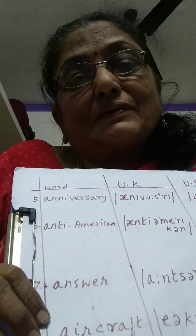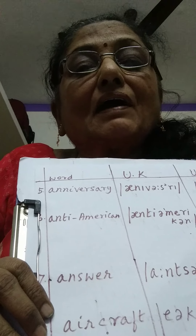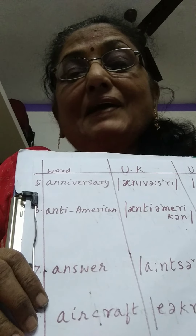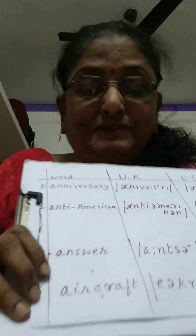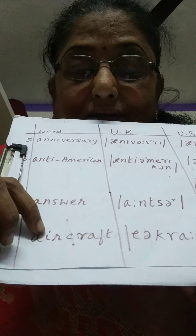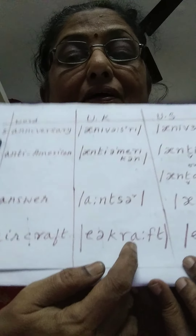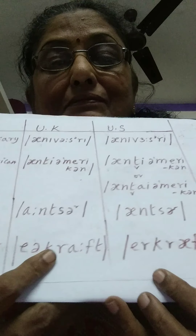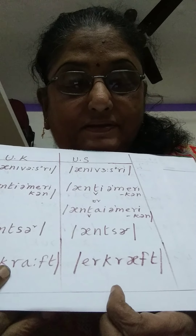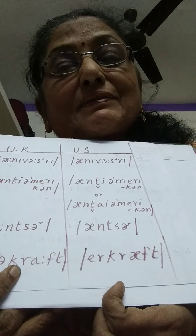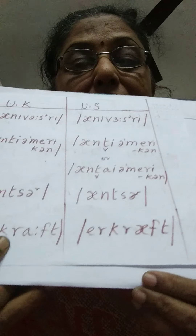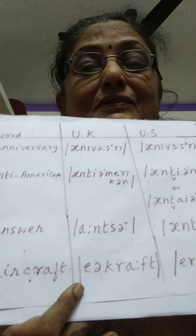The next word is 'aircraft.' Normally we say 'aircraft,' but the British pronounce it as 'aircraft.' Americans pronounce it as 'aircraft' — so the vowel in the first syllable differs between British and American pronunciation.